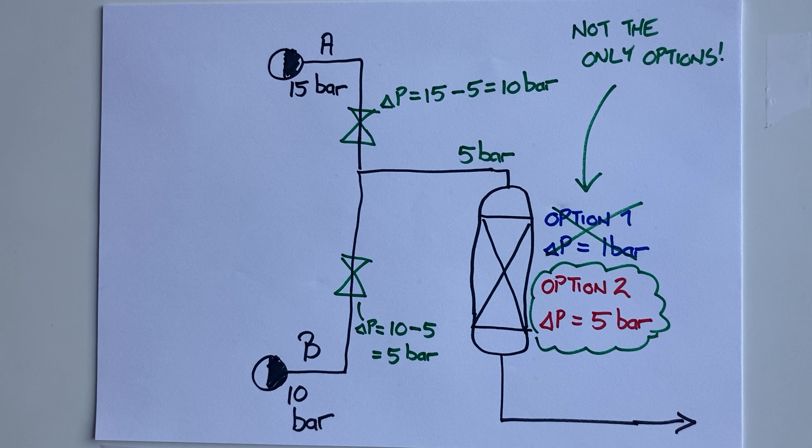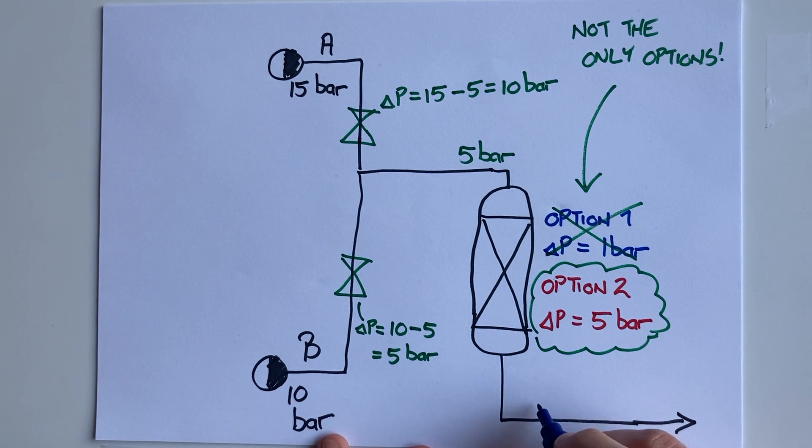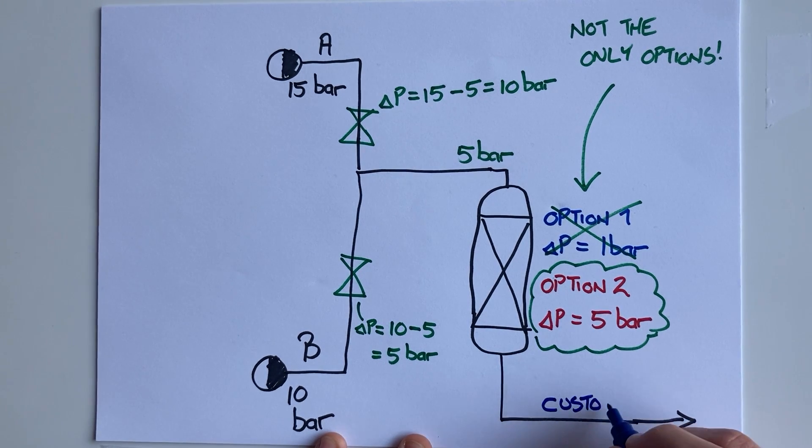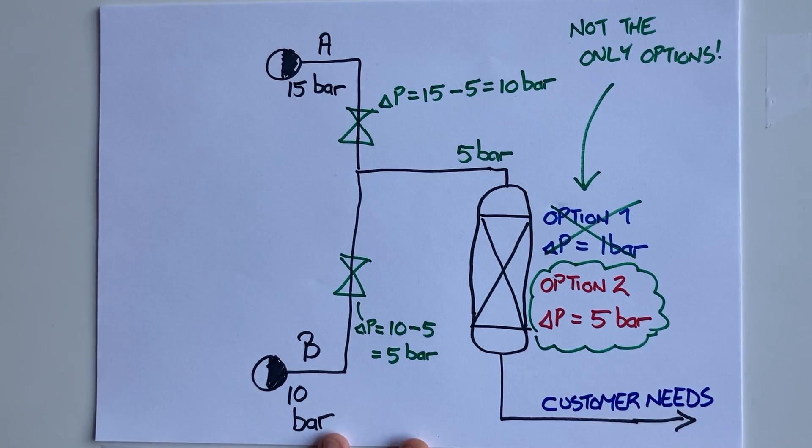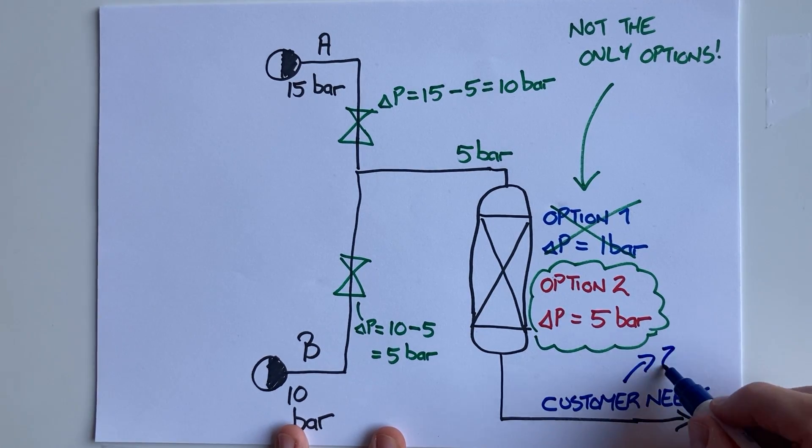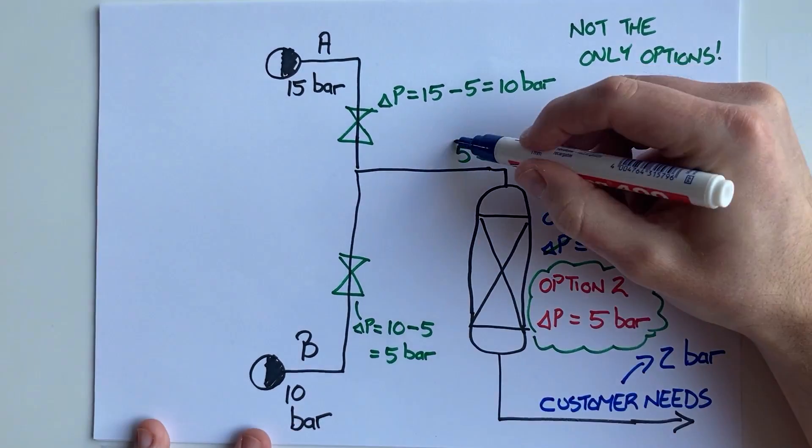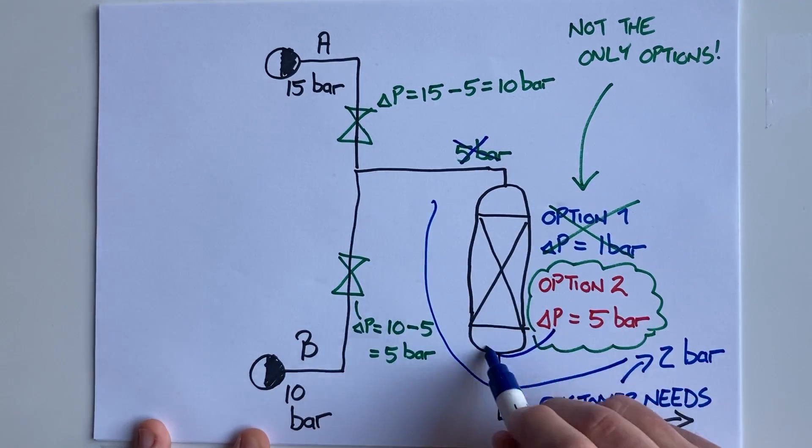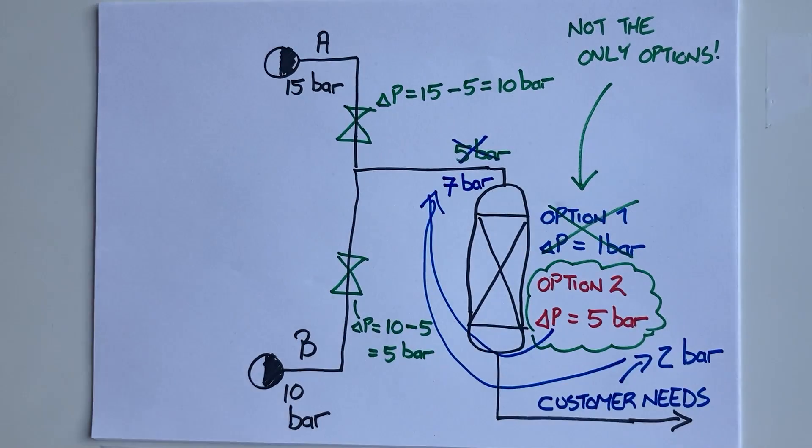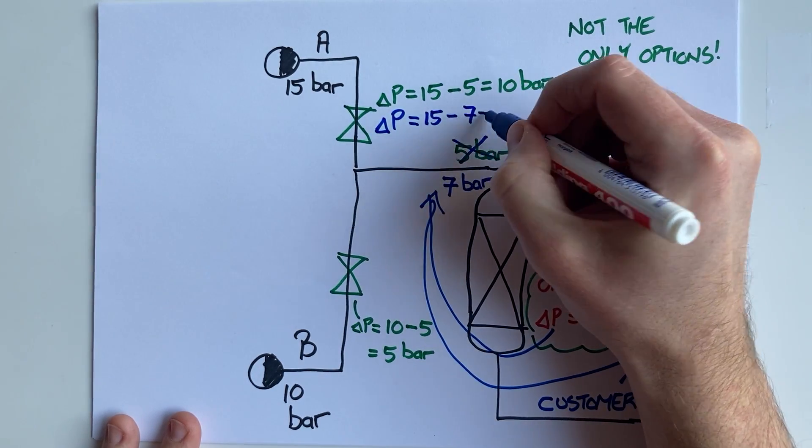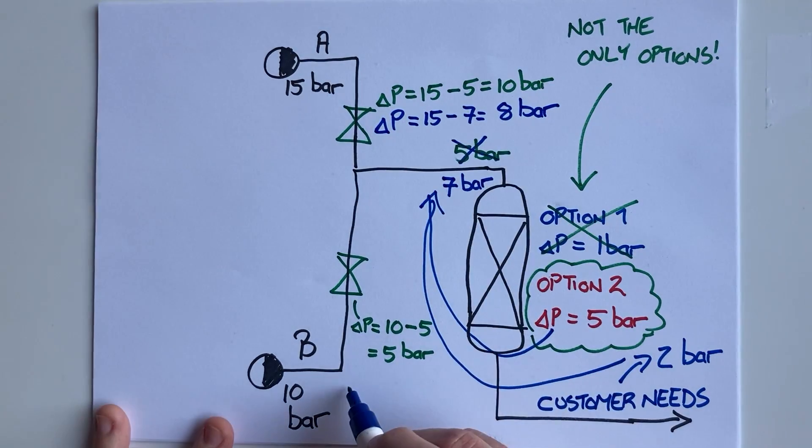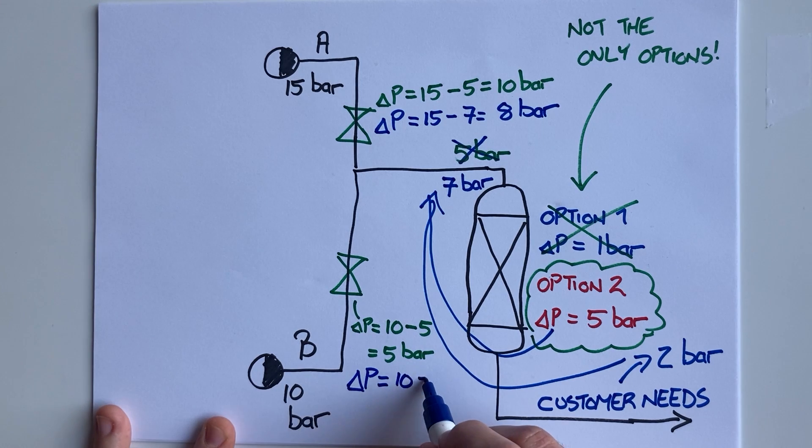Let's also assume that I had a customer downstream or another plant downstream that needed a minimum pressure of 2 bar for their plant. Well then, I would need 2 bar out of my reactor. This means that I would need an inlet pressure of at least 7 bar. Can you see how these decisions and design considerations are determining the mixing pressure? In fact, you could say the individual upstream pressures are not that important in determining the mixing pressure. They just need to be high enough.